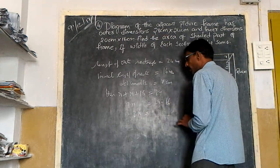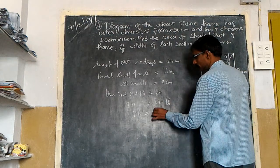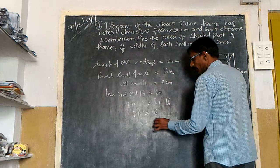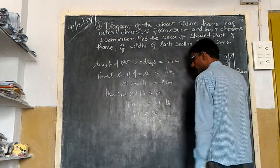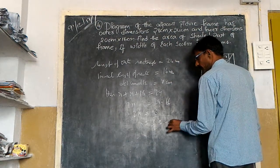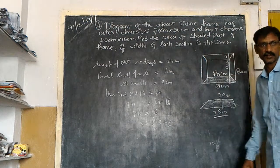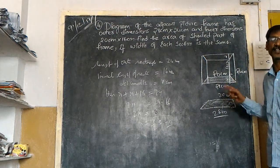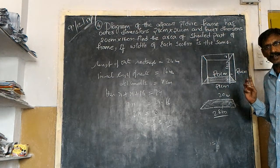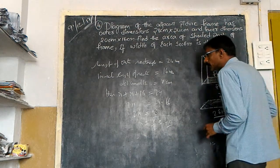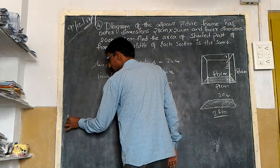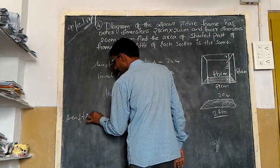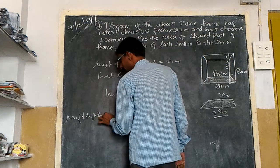Therefore, two x equals eight. So x equals eight by two, which equals four centimeters.